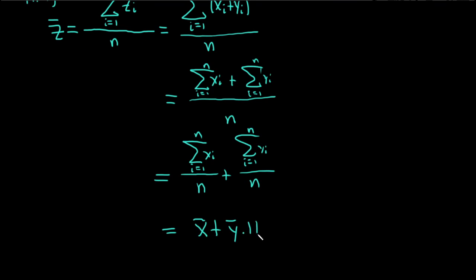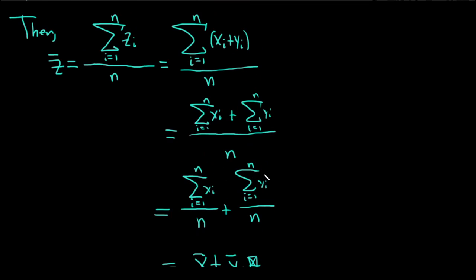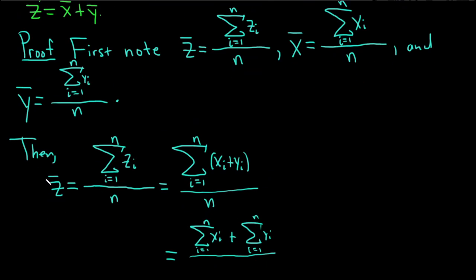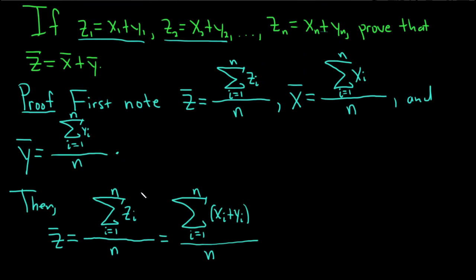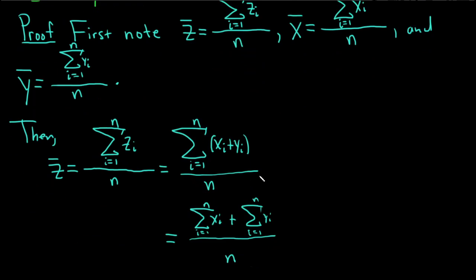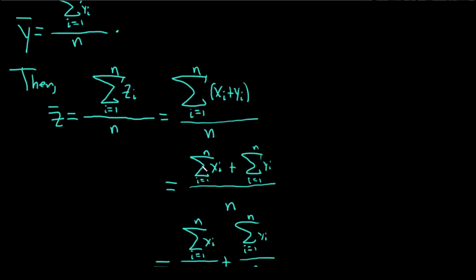So really simple problem, just an exercise in notation. So basically, you just write down the definition of Z bar. It's the arithmetic mean. It's the sum of the Zs divided by the total number of data points. And then use the definition of Z sub i as given in the problem. It's just Xi plus Yi.